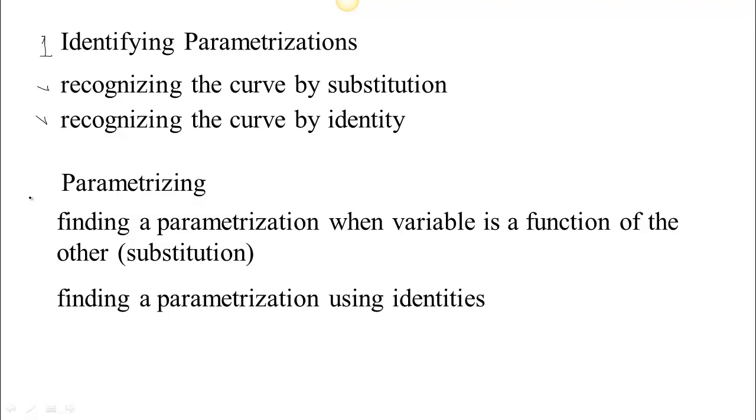The second skill, if we look at a parametrization, we can identify what the curve is. If we have a curve, can we find a parametrization? We're going to look at two ways of doing that. One of them is basically substitution - one of the variables is a function of the other, and we just make a substitution. The other way is to use an identity in order to find a parametrization for the curve.